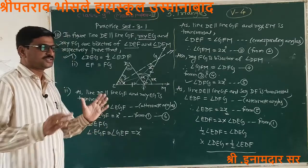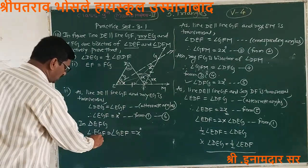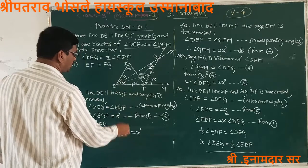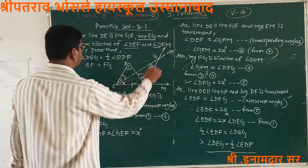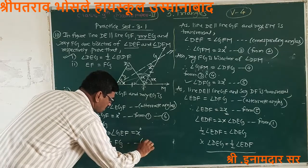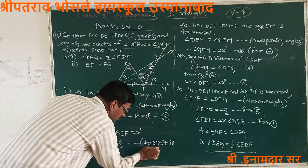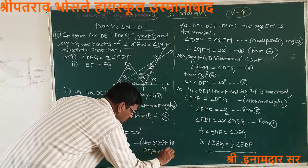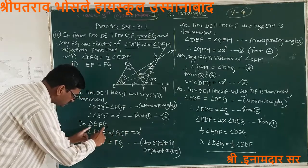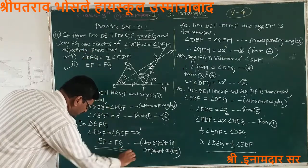In triangle EFG, since two angles are equal, the sides opposite to those equal angles are also equal. Angle EGF is opposite to side EF, and angle GEF is opposite to side FG. Therefore EF equals FG. This proves part two of example 10, completing practice set 3.1.